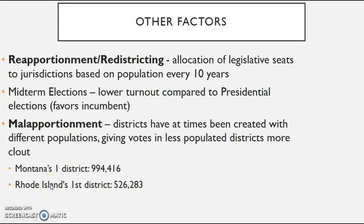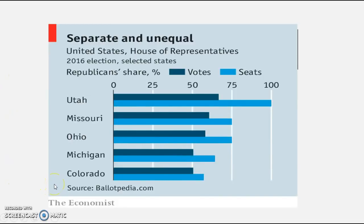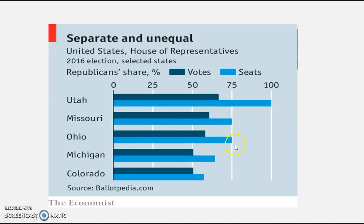Within the same state, however, districts of unequal size would not be allowed — they have to be roughly equal and cannot be malapportioned. Some congress members represent fewer people and some represent more depending on the state. A great example: in Utah in 2016, about 60 to 70 percent of people voted Republican yet Republicans got 100 percent of the seats in Congress — that's gerrymandering. In many ways gerrymandering is very undemocratic, but it's been in place for a couple hundred years.